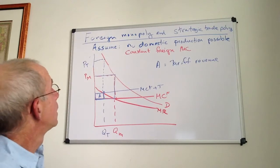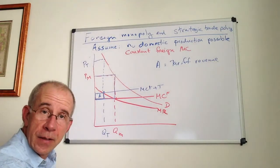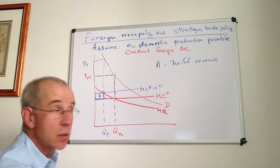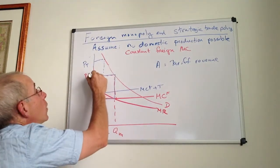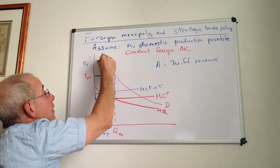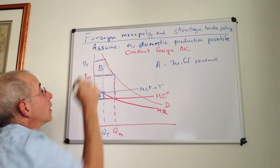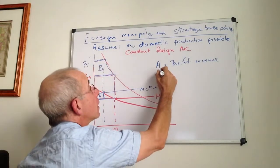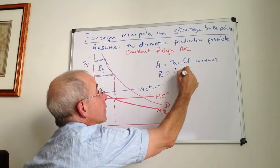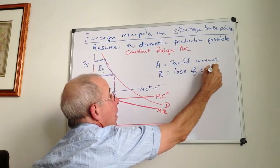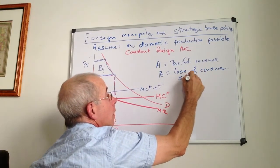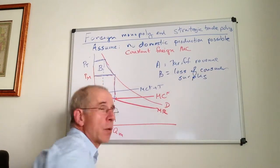Now what kind of impact does this have on domestic consumers? We have area B, which represents the loss of consumer surplus.